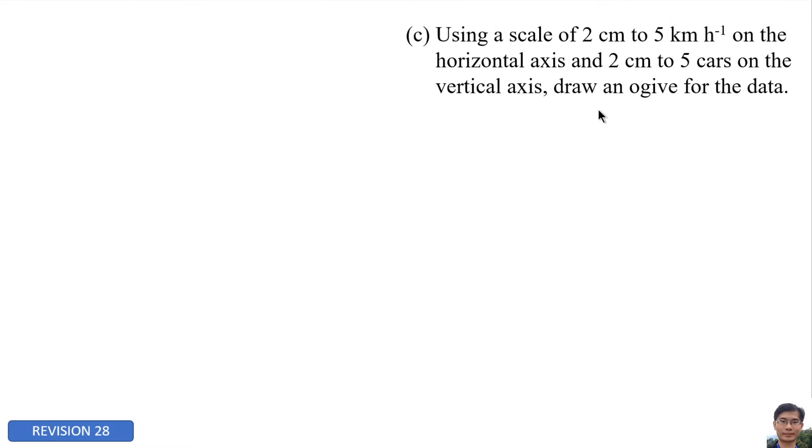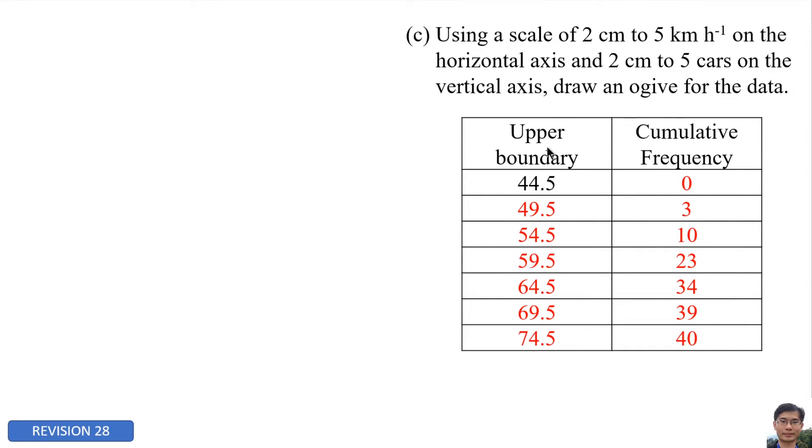We need to draw an ogive for the data based on the scale given. It's the upper boundary and cumulative frequency from the previous table. We need to draw the ogive based on this data. Horizontal axis: the scale is 2 cm to 5 km per hour. For vertical axis, the scale is 2 cm to 5 cars.